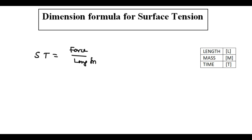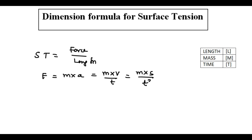First I am going to find the dimension formula for the force. The force is given by mass into acceleration, and I am going to substitute for the acceleration as velocity by time. So the formula becomes mass into velocity by time. Further, if I substitute for velocity that is equal to displacement by time, we get mass into displacement by time square.